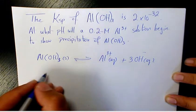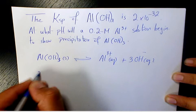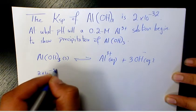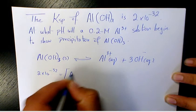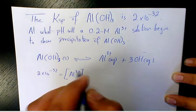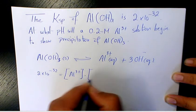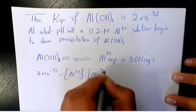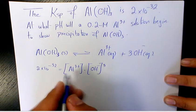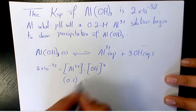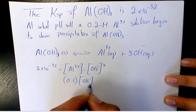2×10⁻³², so 2×10⁻³² equals [Al³⁺][OH⁻]³. The concentration of aluminum is 0.2, here we have [OH⁻]³.